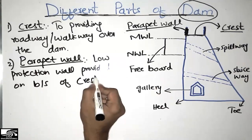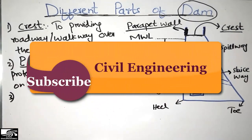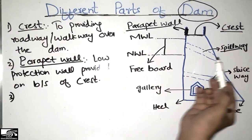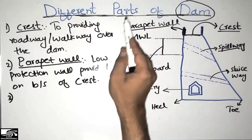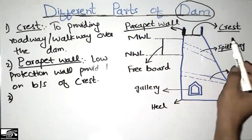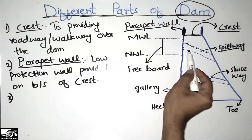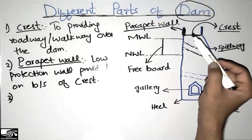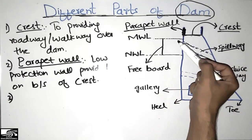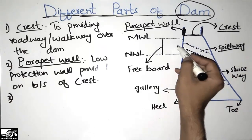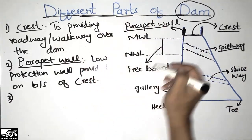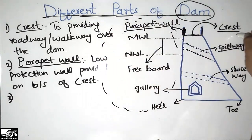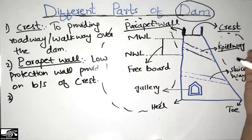The third part of the dam is the spillway. The spillway is a very important part of the dam. It is always provided near the top surface of the dam for the passage of excess or surplus water from the reservoir. The upstream face is the side of the dam facing the reservoir, while the downstream face is the other side.